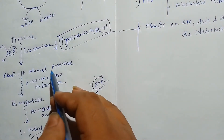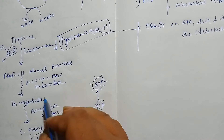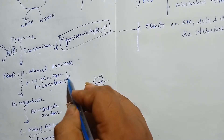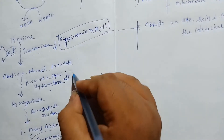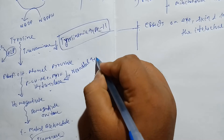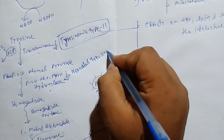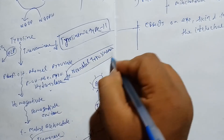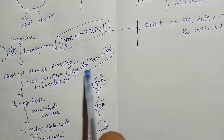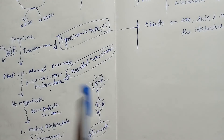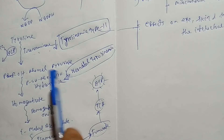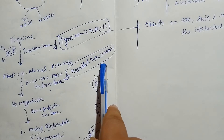From para-hydroxyphenyl pyruvate, we get homogentisate. There is an enzyme called para-hydroxyphenyl pyruvate hydroxylase. Whenever there is dysfunction of this enzyme, it leads to neonatal tyrosinemia — meaning it is found in newborn children who suffer from deficiency of this enzyme.